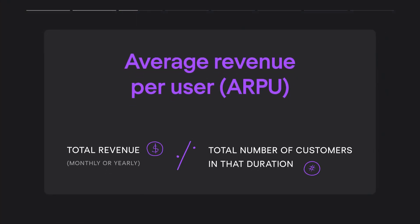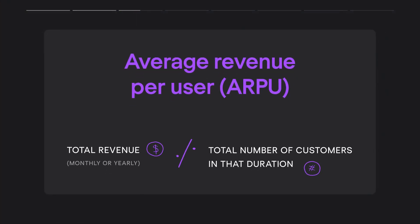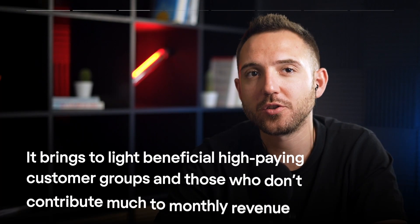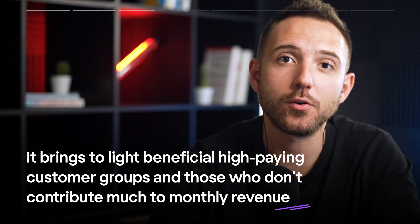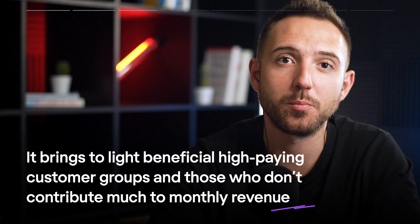ARPU indicates how much money you receive from one user. To get your ARPU, divide total revenue by the number of customers you have. This metric is important because it brings light to high-paying customer groups and those who don't contribute much to monthly revenue.